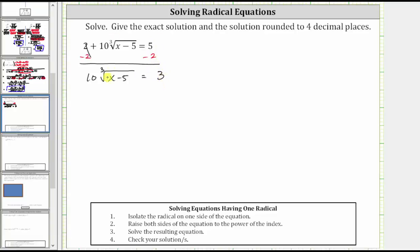The next step is to divide both sides by 10. Simplifying, 10 divided by 10 simplifies to one. We now have the cube root of the quantity x minus five equals three-tenths.